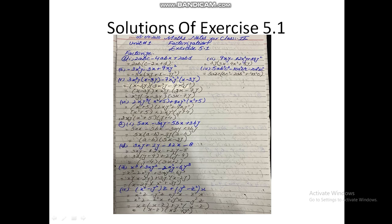For part number 2: 9xy minus 12x²y plus 18y². First, think about what can be taken as common — 3 is taken as the numeric common, and variable y is also common. So you take 3y as common and the remaining terms are: 3x minus 4x² plus 6y. To understand this, divide each term by 3y: 9xy ÷ 3y, minus 12x²y ÷ 3y, plus 18y² ÷ 3y — and the remaining terms are 3x minus 4x² plus 6y.